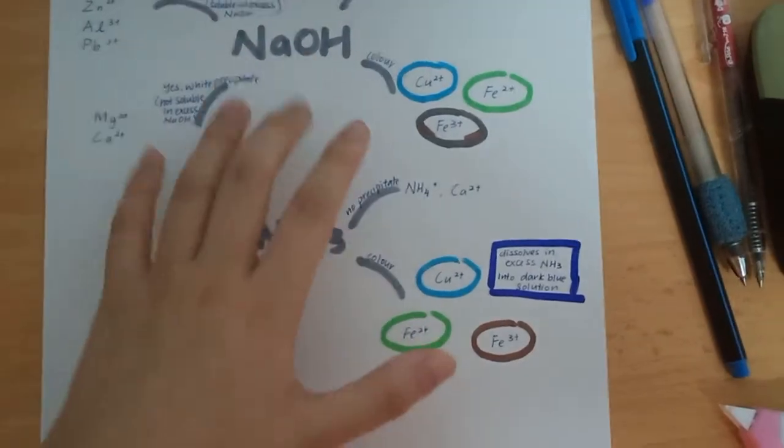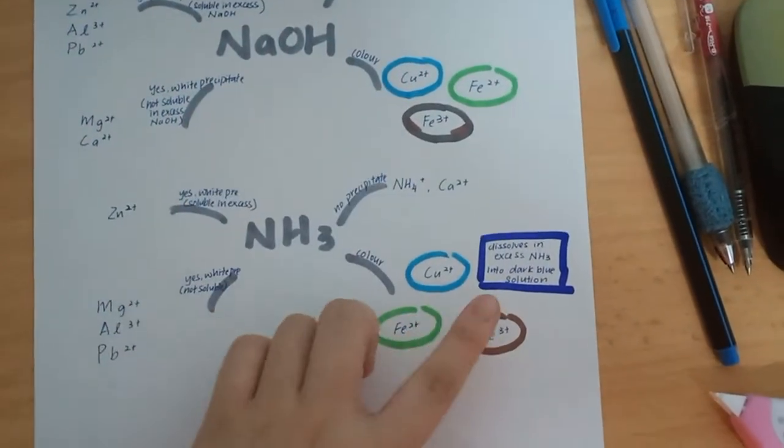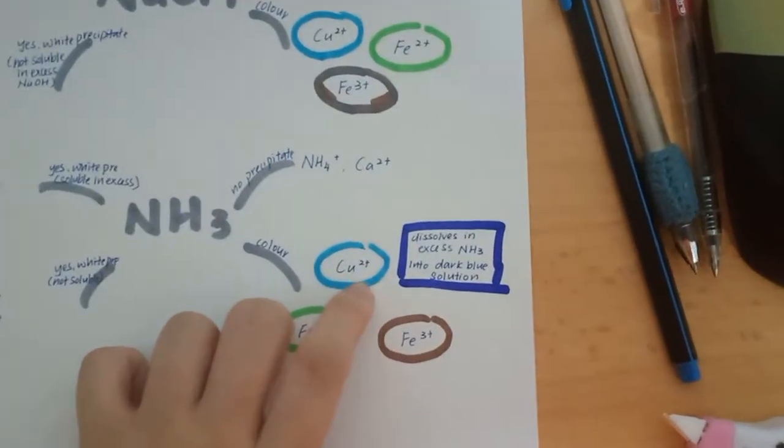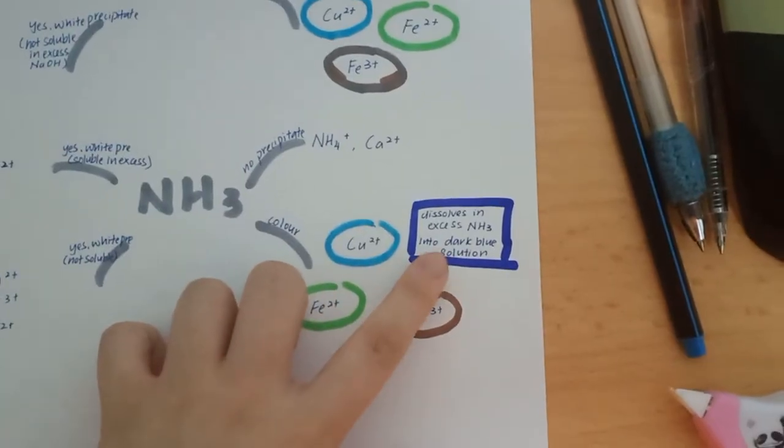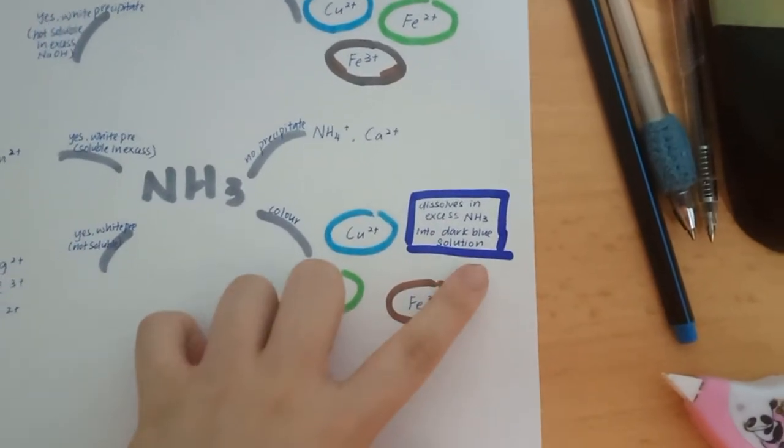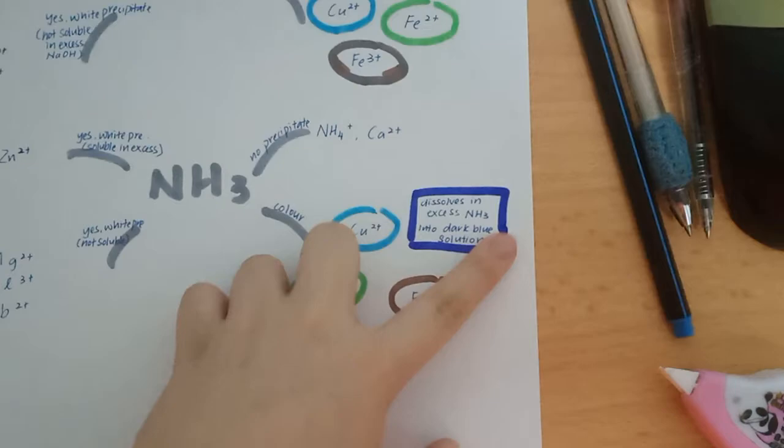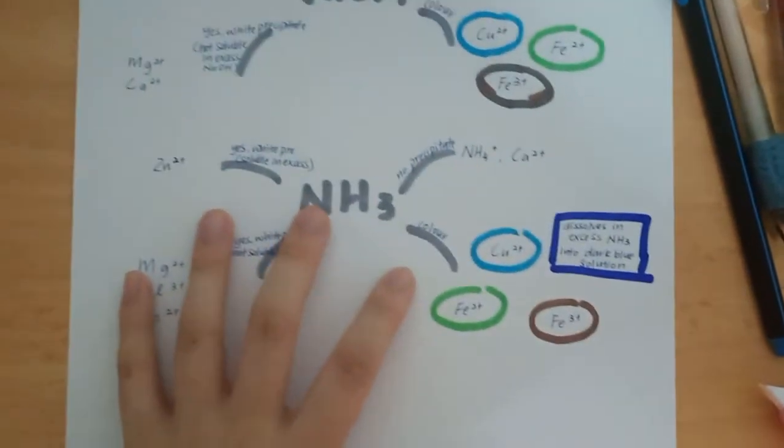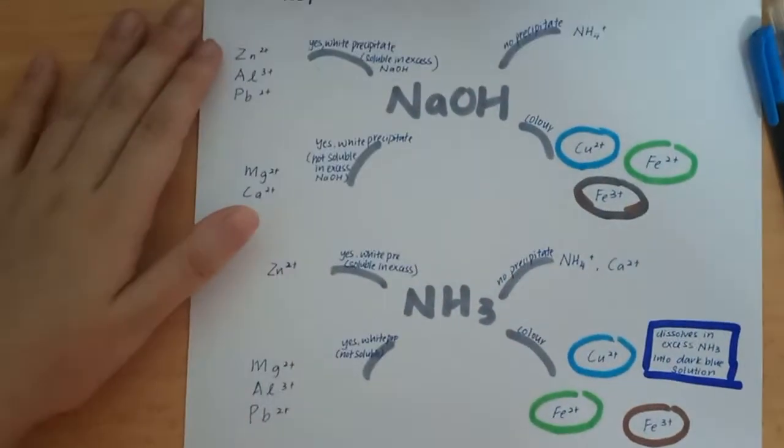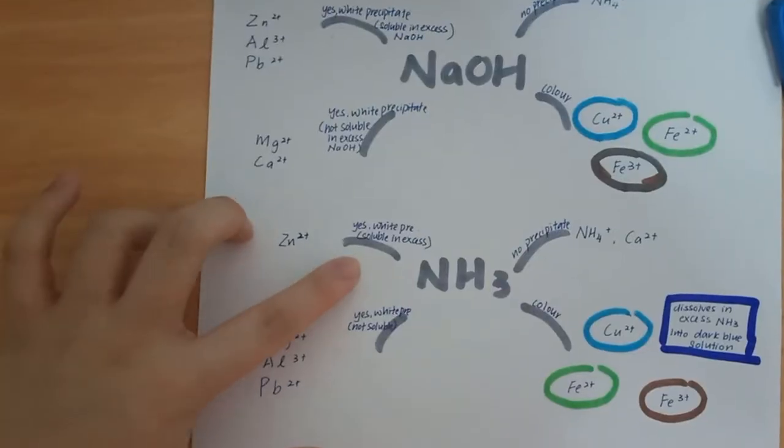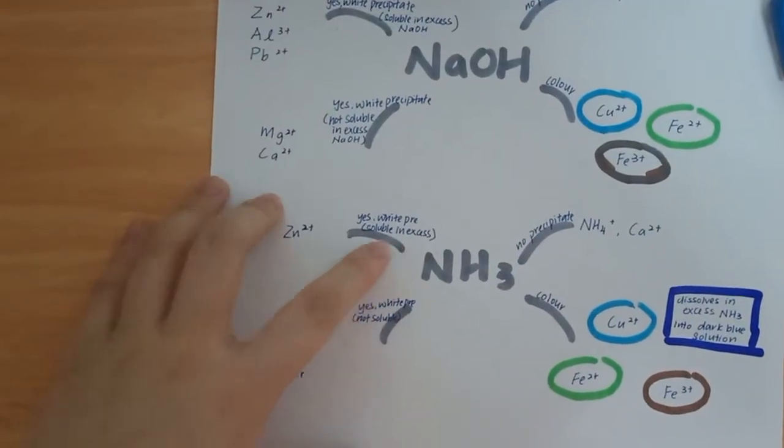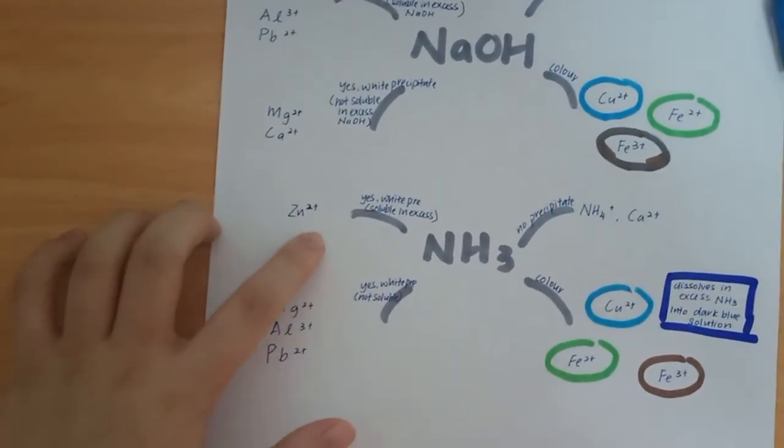Next is the color which is the same as before, it's just a little bit different. When you add excess NH3 it will form a dark blue solution, so I put it in dark blue here and the others are the same. So in this yes white precipitate form it will form Zn2+.